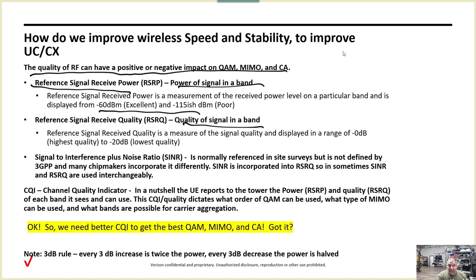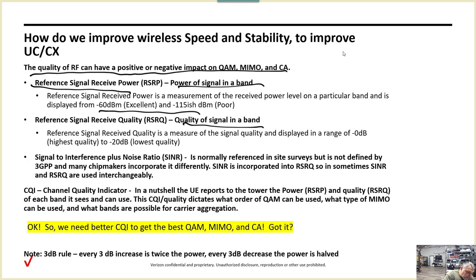We have the power of the band and the quality of the band. Think of the band as the freeway we're using — every freeway we bring up in carrier aggregation or the main freeway has a certain quality. Maybe one has potholes and obstructions, some don't. RSRQ quality is measured in dB: highest is around 0 dB, lowest is around negative 20 dB. Then there's SINR — signal to interference plus noise ratio — which represents the noise on a particular band.